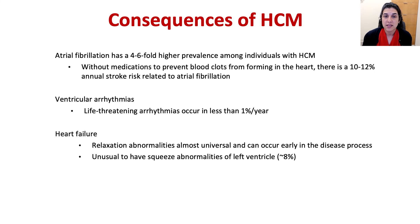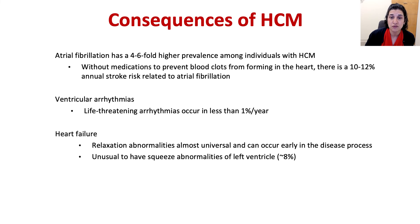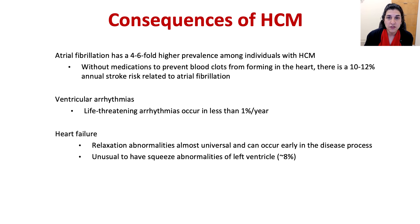Early diagnosis and recognition of the disease is important because the long-term consequences of hypertrophic cardiomyopathy are significant. Atrial fibrillation is a common rhythm abnormality, occurring at four to six times higher prevalence among people with HCM than the general population. Without medications to prevent blood clots, atrial fibrillation carries an annual stroke risk of about 10 to 12 percent. There is also risk of life-threatening ventricular arrhythmias from the bottom chambers of the heart, occurring less than one percent per year — but identifying those at high risk is critical.